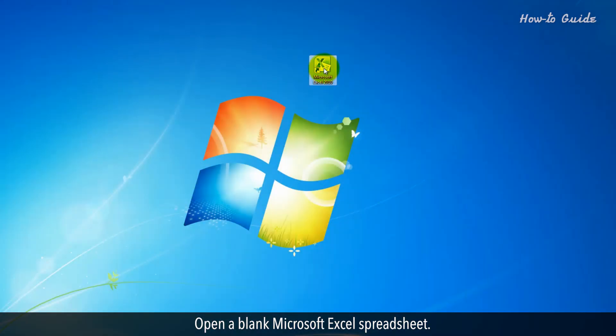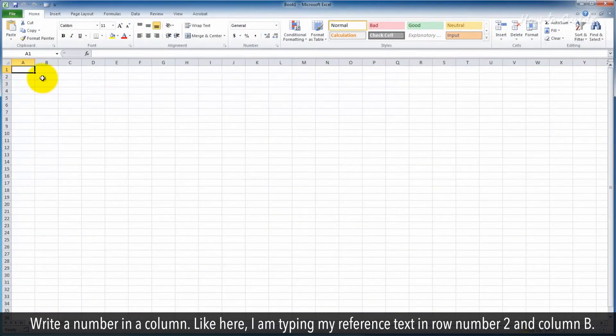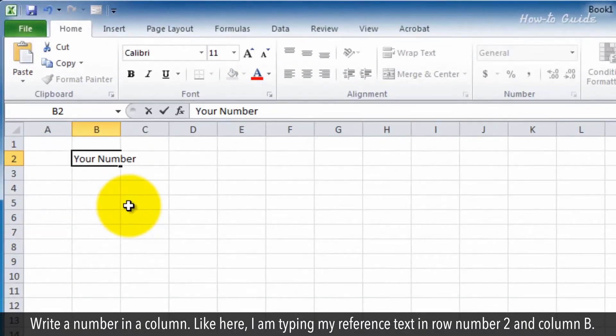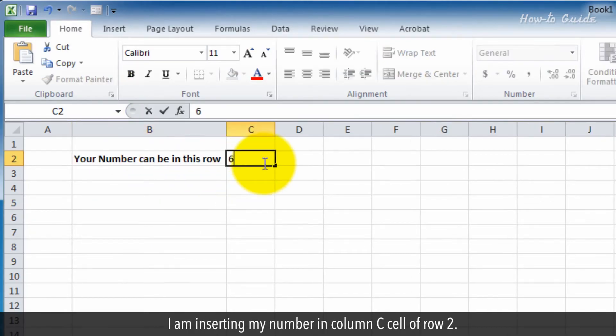Open a blank Microsoft Excel spreadsheet. Write a number in a column. Like here, I am typing my reference text in Row 2 and Column B. I am inserting my number in Column C cell of Row 2.